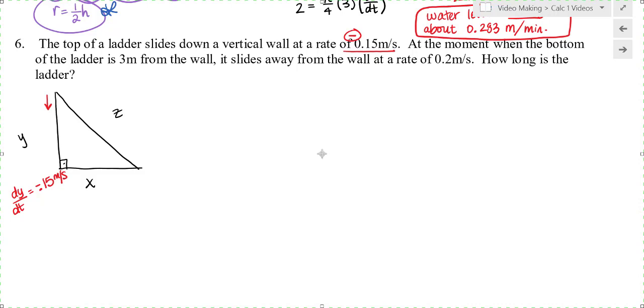At the moment when the bottom of the ladder is three meters from the wall, so that means X is three meters, it slides away from the wall. So dX/dt is positive 0.2 meters per second. And it wants to know how long is the ladder. So I'm trying to find Z. What's the relationship that's going to relate my variables? Well, I know Pythagorean theorem. This is not talking about an angle at all. It's only talking about the side lengths that you're creating. So I know X squared plus Y squared equals Z squared.